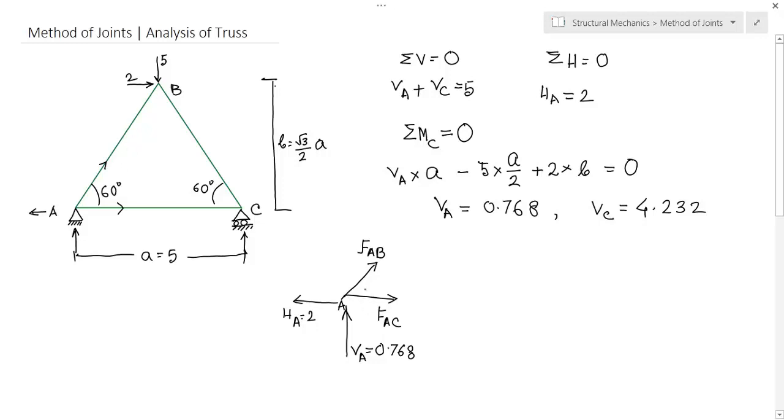Now for this joint you have two equations. One is along the vertical and one is along the horizontal direction. For the joint to be in equilibrium, the vertical directional forces and the horizontal directional forces should be in equilibrium. What are the equations in vertical direction?